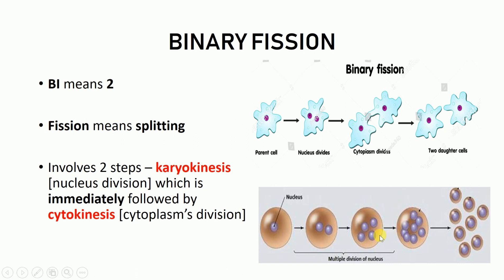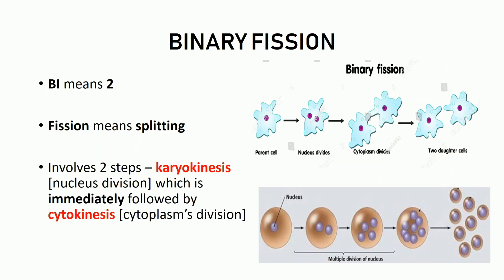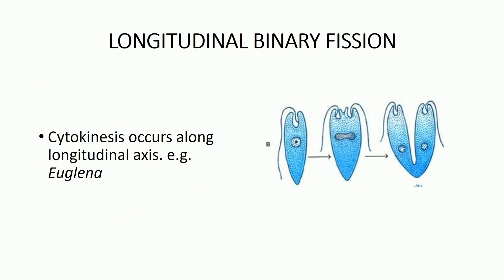Multiple fission takes place in Aggregata, but a more common example is Plasmodium vivax, the malarial parasite. Now, what are the types of binary fission? The first type is longitudinal binary fission, in which cytokinesis occurs along the longitudinal axis — the long axis of the body. The fission point is along this long axis, and this occurs in Euglena.